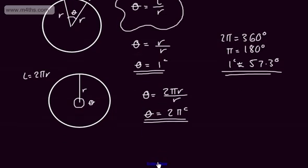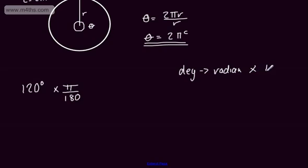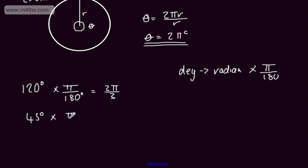We can convert from degrees to radians and radians to degrees. To convert from degrees to radians, multiply by π over 180. For example, 120 degrees multiplied by π/180 — dividing both by 60 — gives 2π/3. For 45 degrees, multiplying by π/180, since 45 goes into 180 four times, gives π/4 radians.